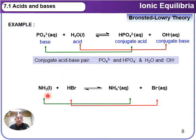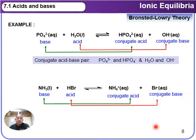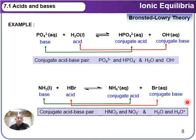Another example: NH₃ is paired with NH₄⁺, while HBr is paired with Br⁻. NH₃ is a base because it receives a proton donated by the acid HBr to form NH₄⁺, while HBr, after donating its proton, becomes Br⁻ as the conjugate base. So the conjugate acid-base pairs are NH₃/NH₄⁺ and HBr/Br⁻.